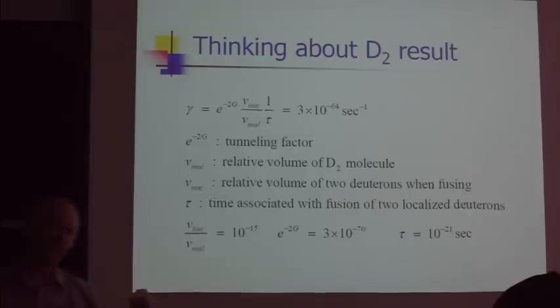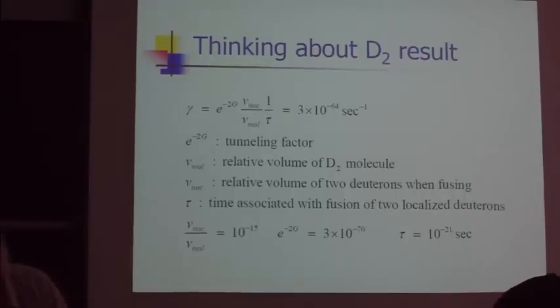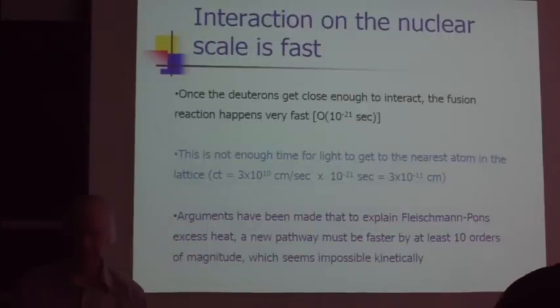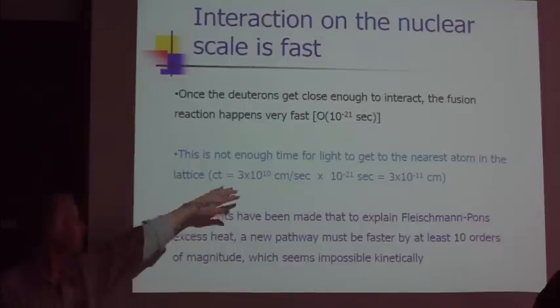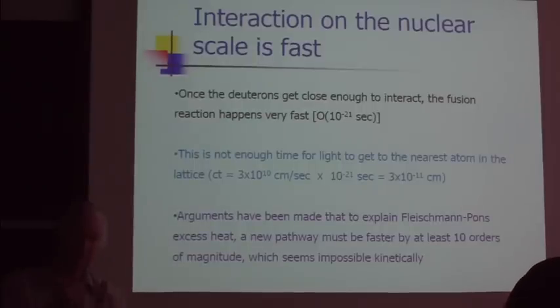The way to interpret that is the two deuterons in a molecule tunnel together. Once they get within a barn, one deuteron gives a nucleon to the other deuteron, and then they push off and go as fast as the laws of physics allow. The 10^-21 time is characteristic of this very short time it takes for the two deuterons to interact.